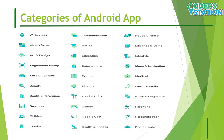Categories of Android apps: The first category is watch apps — whatever apps are used on an Android watch fall into this category. The next category is watch faces used in Android apps. The third category is art and design, which includes sketchbooks, painter tools, art and design tools, and coloring books.